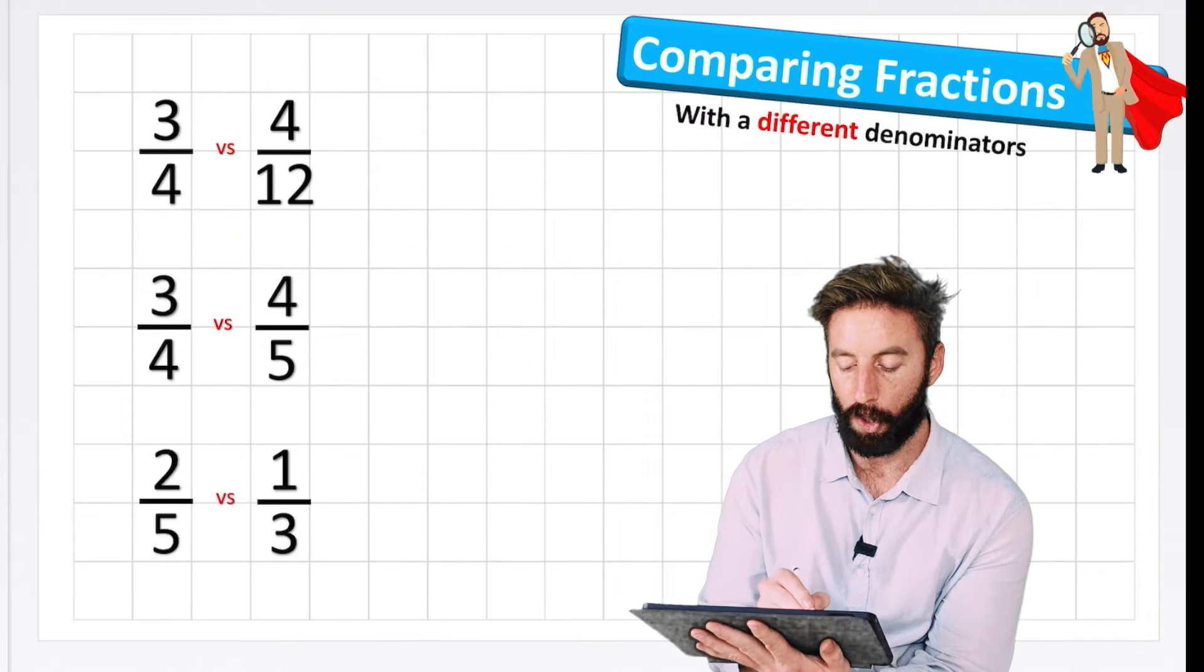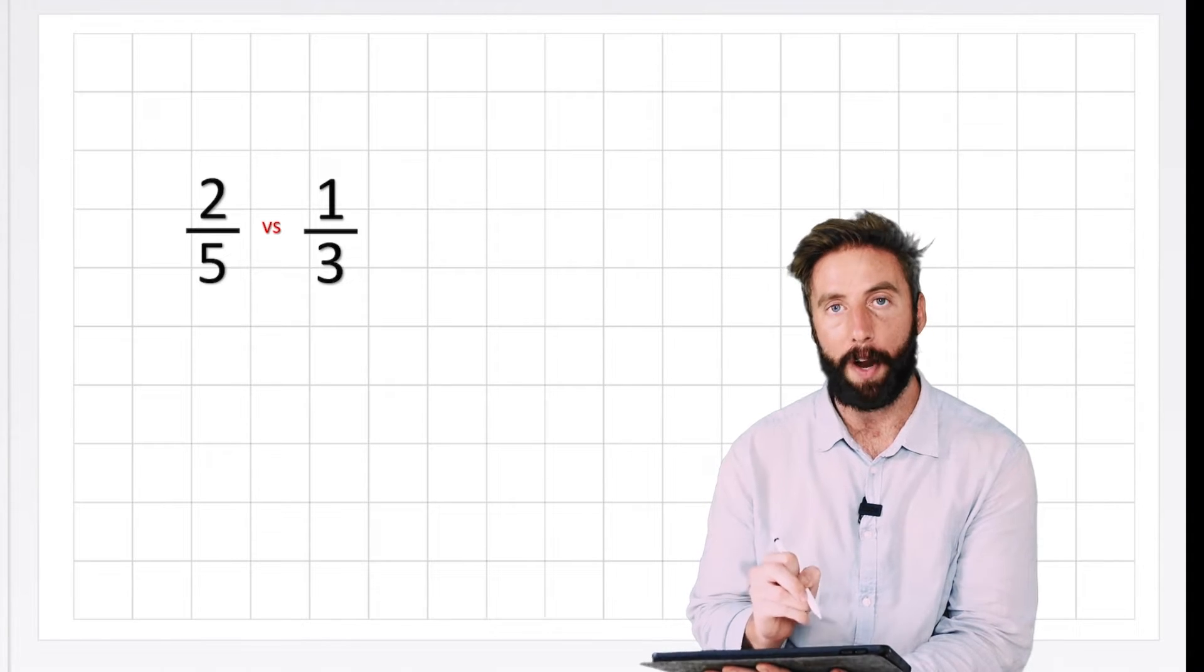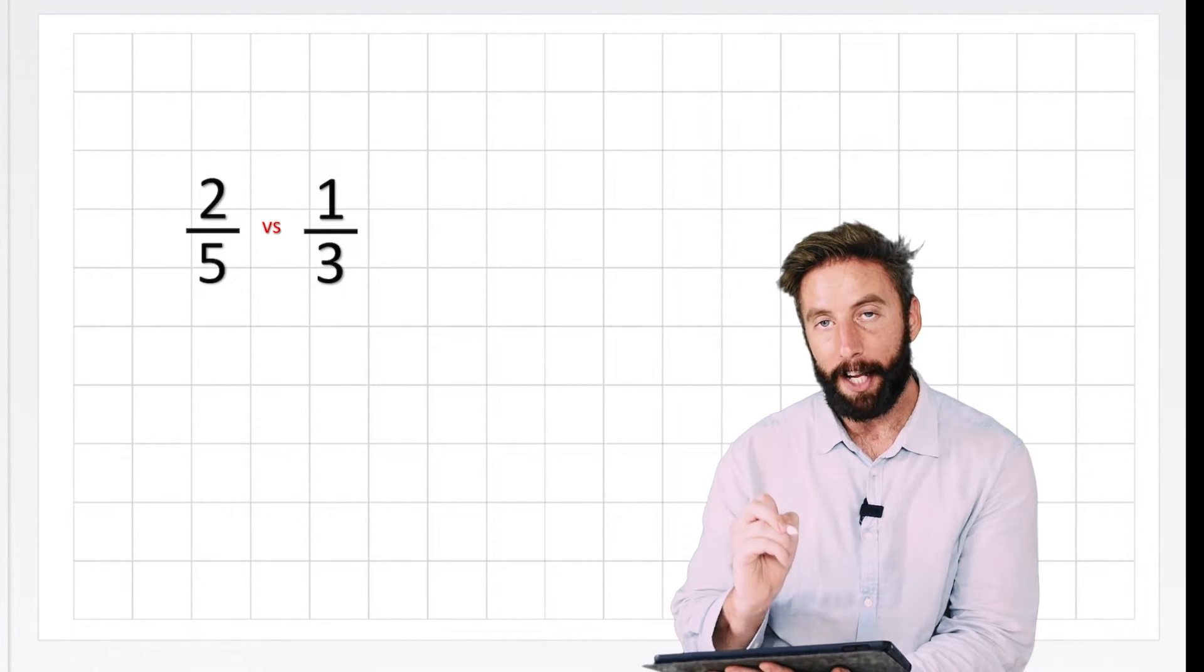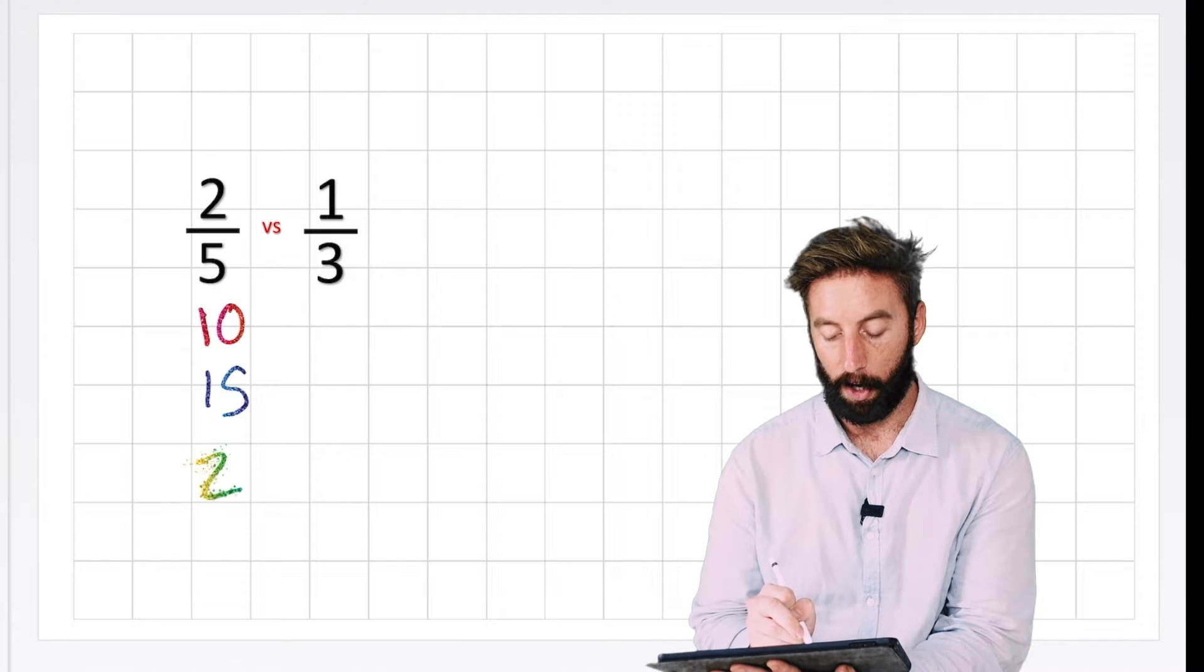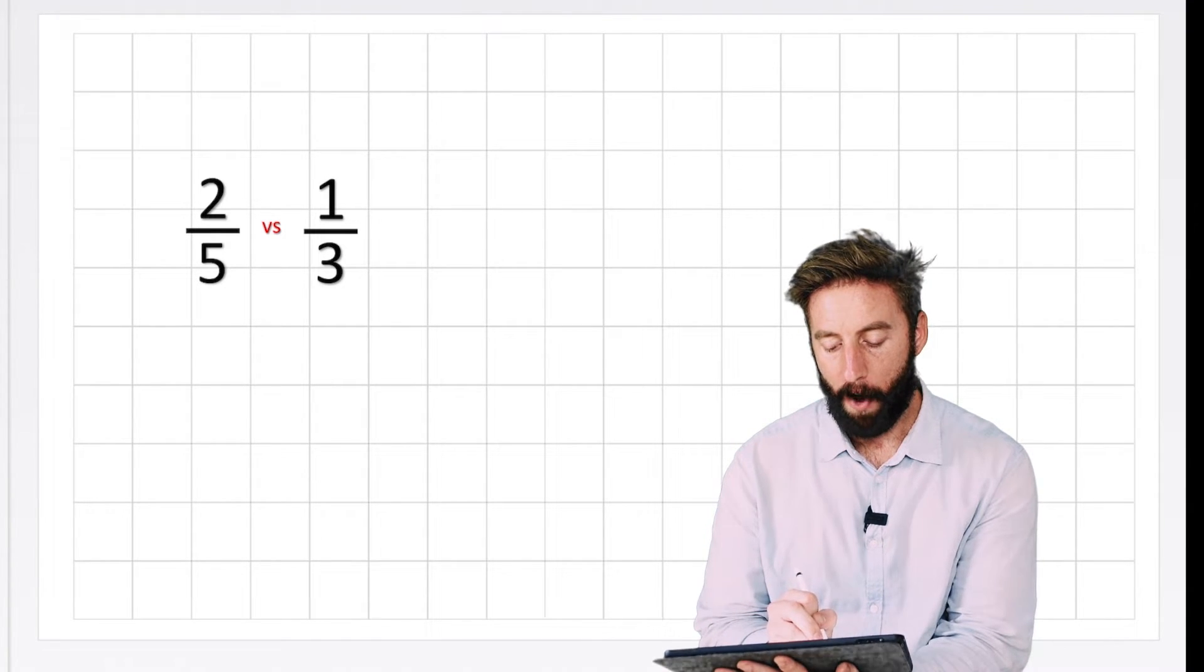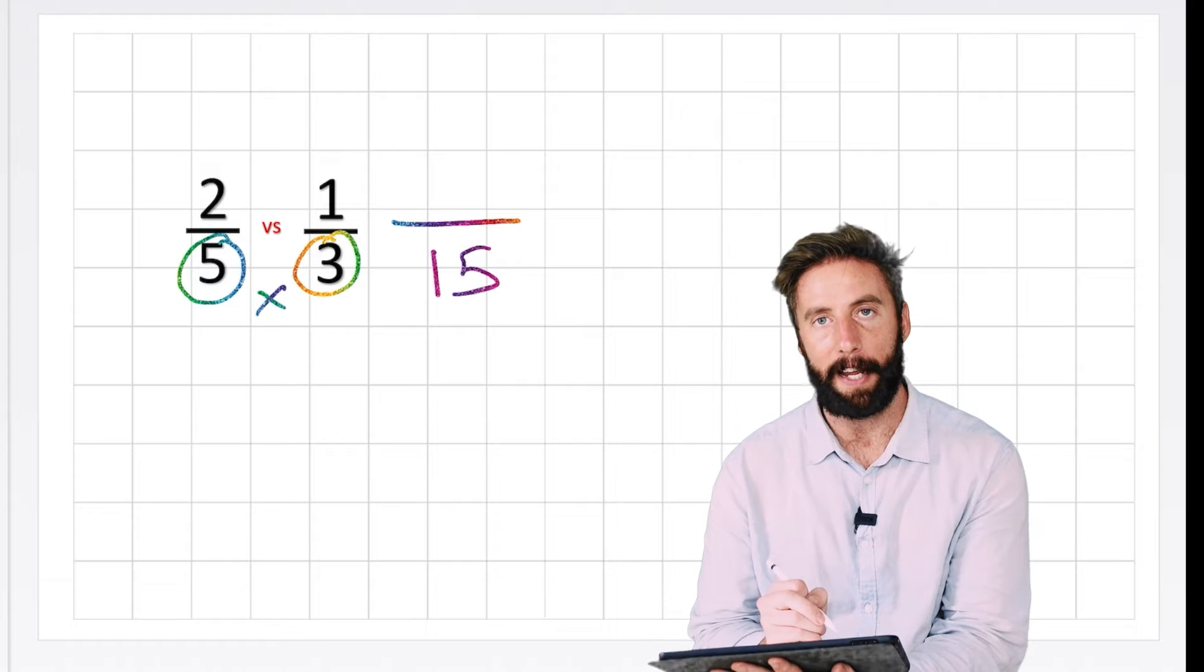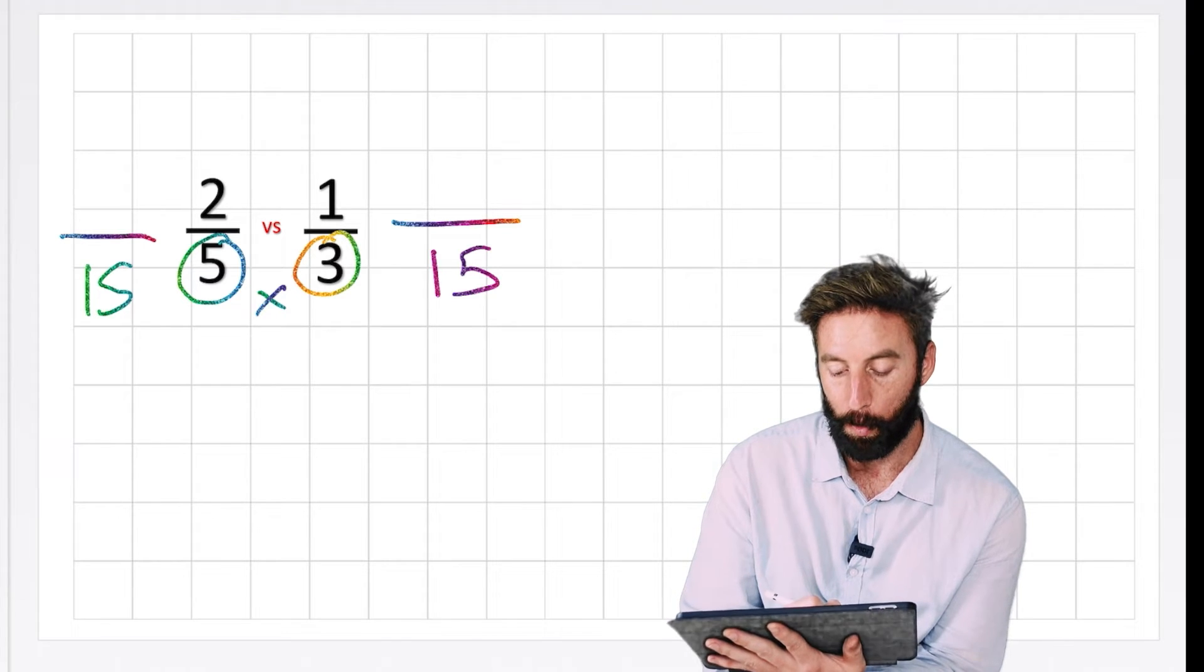Let's look at another way of doing that on question 3. So question 3 is this one, 2 fifths versus 1 third. And what I can see straight away is I don't have that obvious relationship between the two numbers. 3 is not in the 5 times table, and 5 is not in the 3 times table. So I need to find that common factor again. What I could do is do my multiplication table all the way down until I find a common one, or I can do a little trick. I'm going to show you a little sneaky trick here. So watch this. If I get my 5 and my 3, and I multiply them together, it gives me 15. Now, because I've multiplied them together, that 15 has to be a multiple of both of them. Therefore, 15 is a common multiple, so I can just use that.